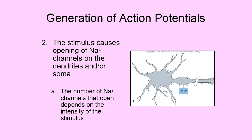Looking at a diagram of a neuron — with the axon, cell body or soma, nucleus, and several dendrites — when a stimulus or change occurs in the environment of a neuron, the dendrites are the receptors. Whatever kind of change it is — electrical, chemical, temperature, pressure, or light — it causes sodium channels lining the area of the dendrites to start to open.